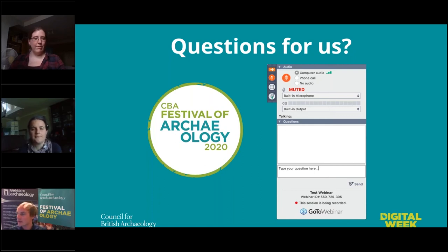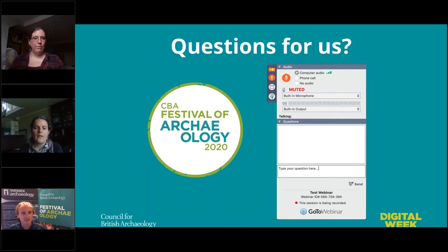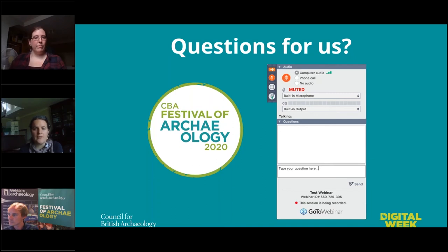Margaret mentions evidence of opium seeds found in Loch Tay — where would opium seeds have been traded from? Are they the same as poppy seeds? Opium poppy was domesticated in the Mediterranean area. We have native poppy species in this country, but the domesticated species is not native. If definitively identified as the domesticated species, it would have been traded from Europe.